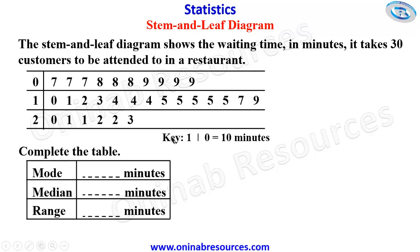Based on the key, the number in the stem column represents the first digit while the number in the leaf represents the second digit. You can also say this is the tens and this is the units. So from here, this is 7 minutes, 7 minutes, 7 minutes, 8 minutes, 8 minutes, 8 minutes, 9 minutes, 9 minutes.